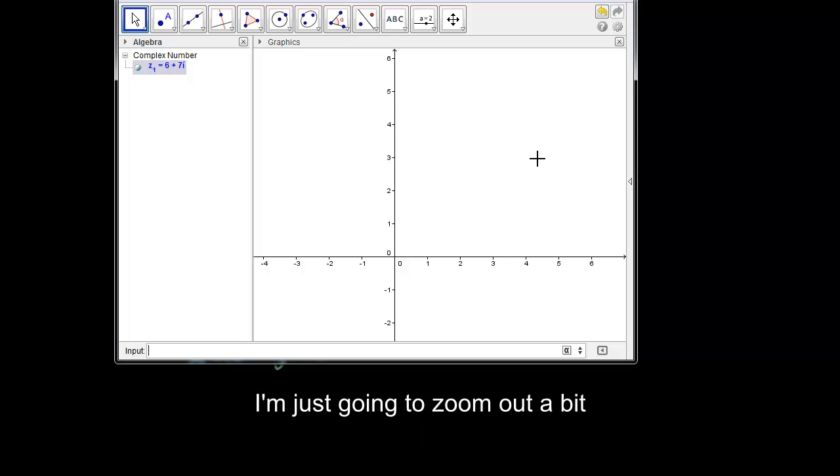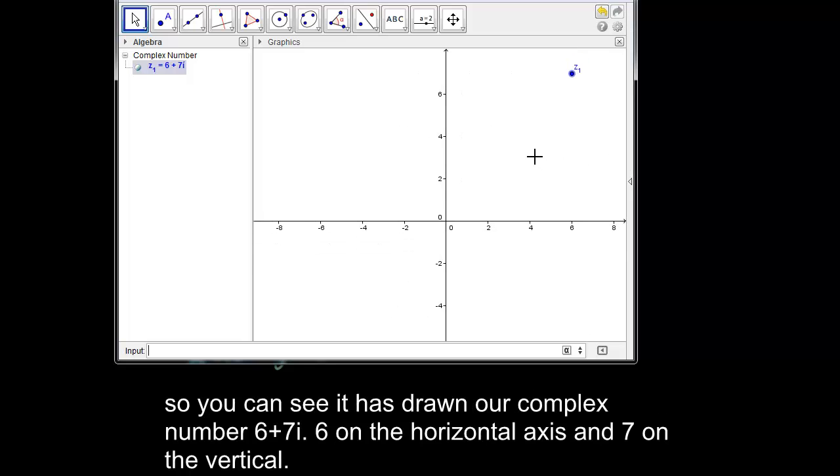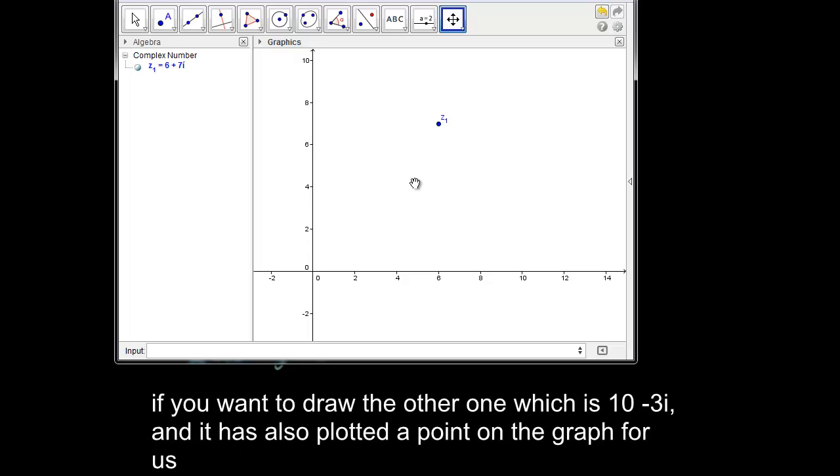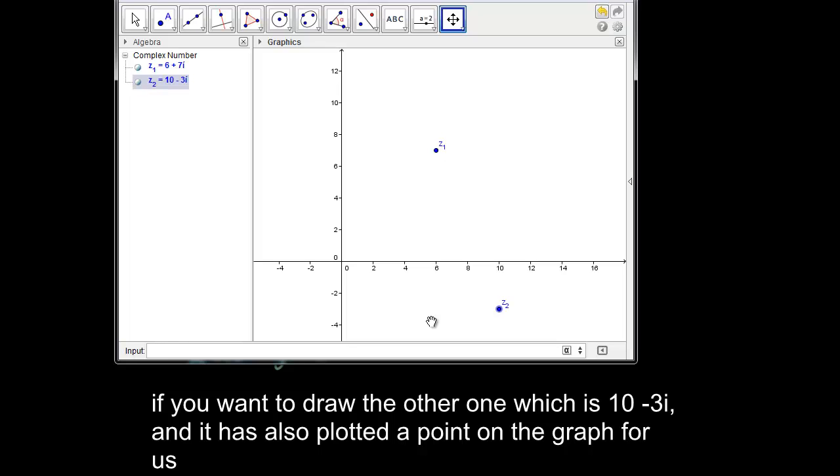So I'm just going to zoom out a bit, so you can see it's drawing our complex number 6 plus 7i. So we have 6 as the horizontal axis, 7 is the vertical. And if you want to draw our other one, which is 10 minus 3i, and it's also plotted our point on the graph for us.